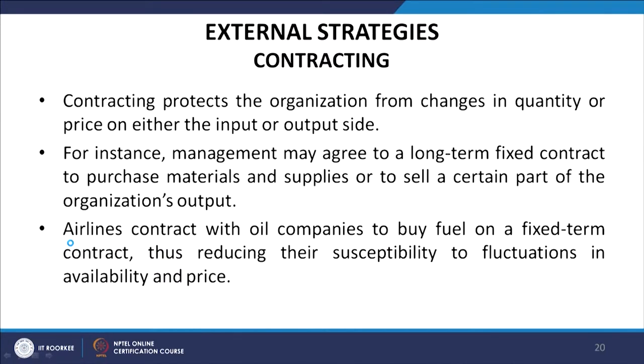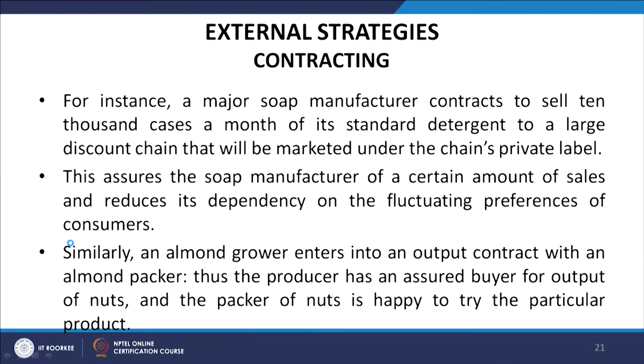The next external strategy is contracting. Contracting protects the organization from changes in quantity and price on either the input or output side. Management may agree to a long-term fixed contract to purchase materials and supplies or to sell a portion of the organization's output. Airlines contract with oil companies to buy fuel on a fixed-term contract, reducing susceptibility to fluctuations in availability and price. A soap manufacturer may contract to sell 10,000 cases a month to a large discount chain under the chain's private label, assuring a certain amount of sales. An almond grower may enter an output contract with an almond packer, giving the producer an assured buyer.